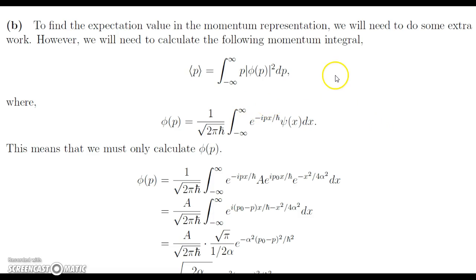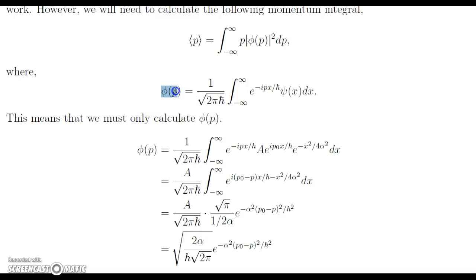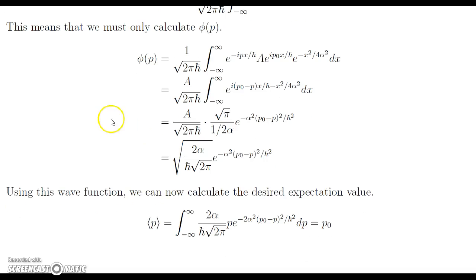This one requires a little more work but is still calculable. To calculate the momentum expectation value in the momentum representation, we take the integral from negative infinity to infinity of p times the modulus squared of phi of p. We know that phi of p is 1 over root 2 pi h-bar times the integral from negative infinity to infinity of e to the negative i·px/ℏ times psi of x. We plug in our psi and get a nasty integral, but we can evaluate it using an integral from the table in the back of the book.